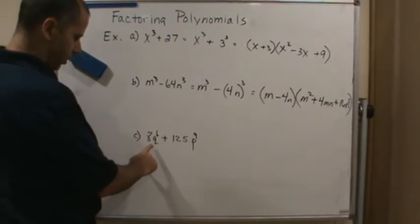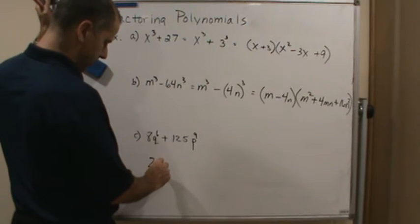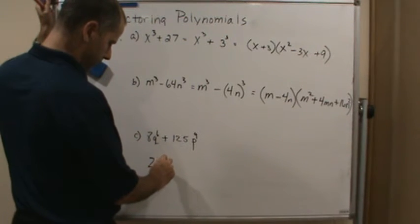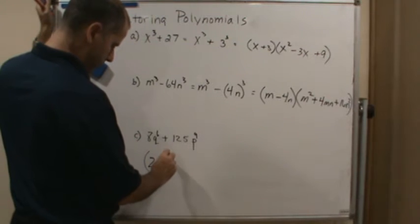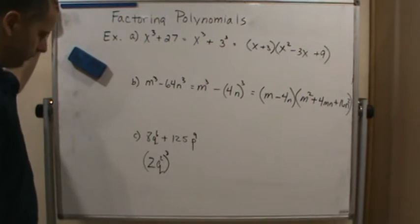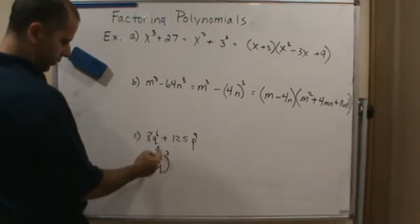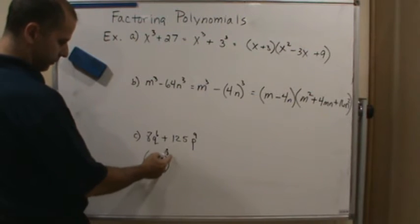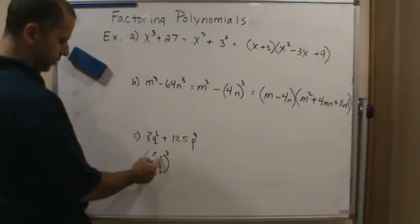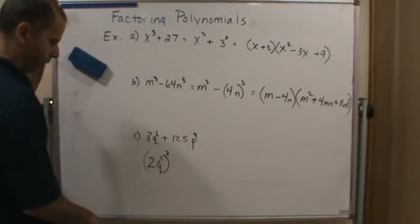And then what can we raise this to a power? This is going to be q squared. Because if we distribute the 3 to here, we get 8. And if we distribute the 3 to here, we get 2 times 3 is 6. So it works.